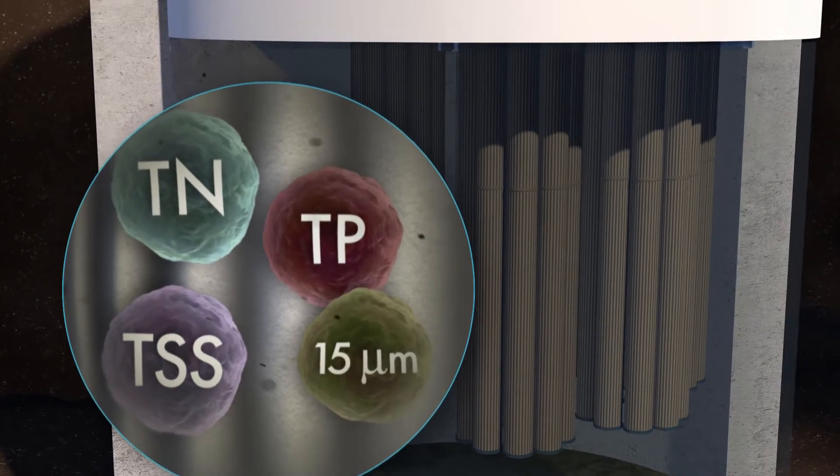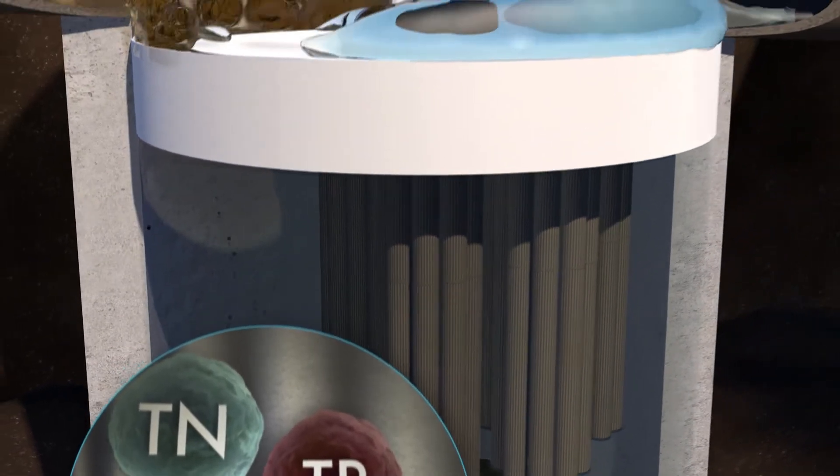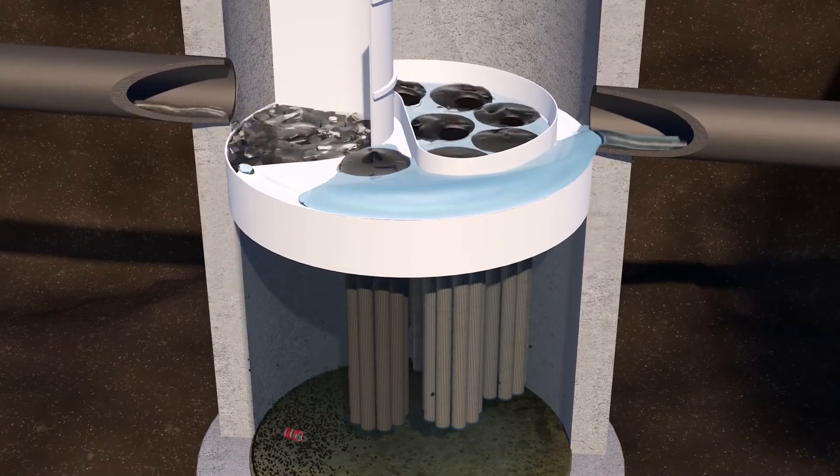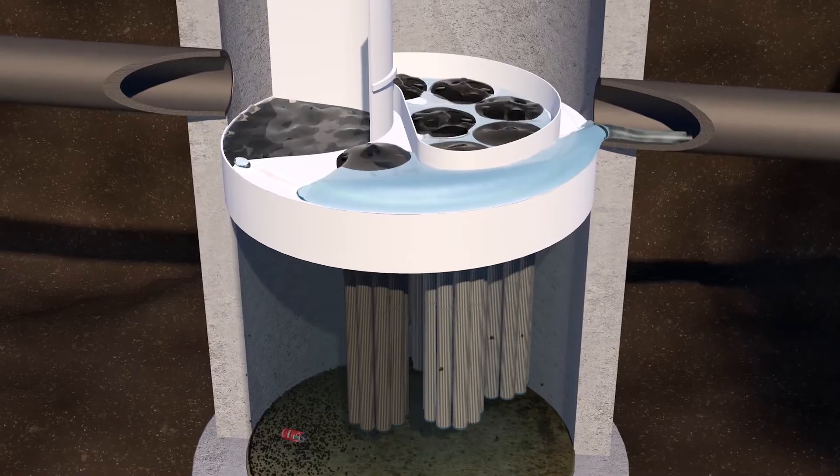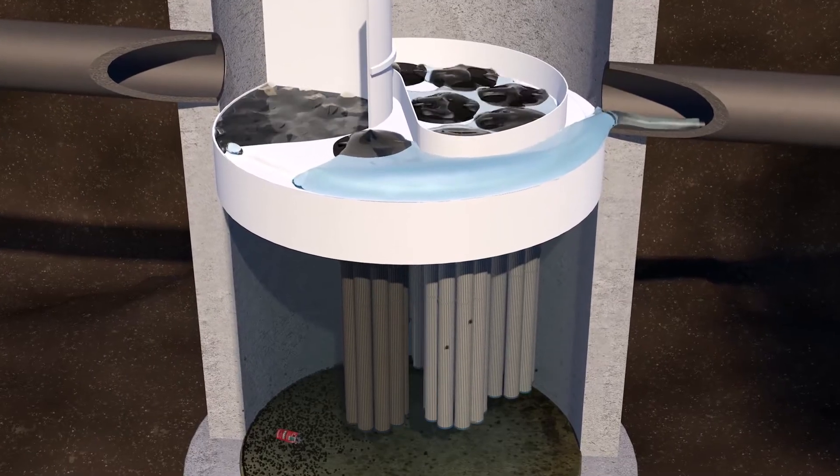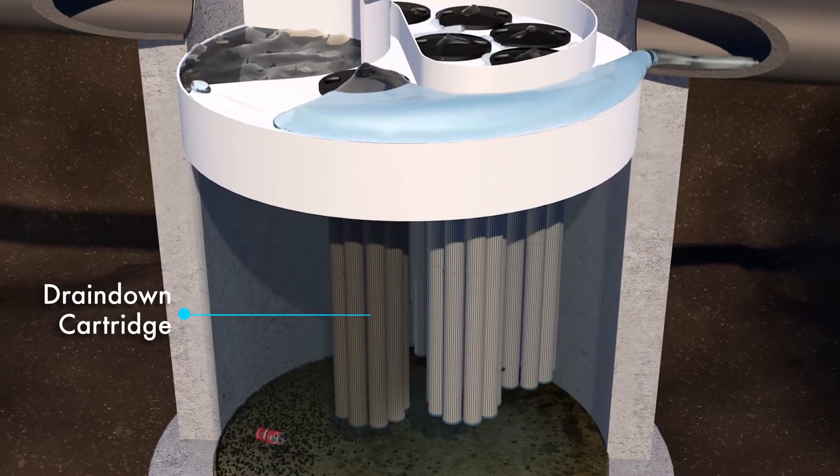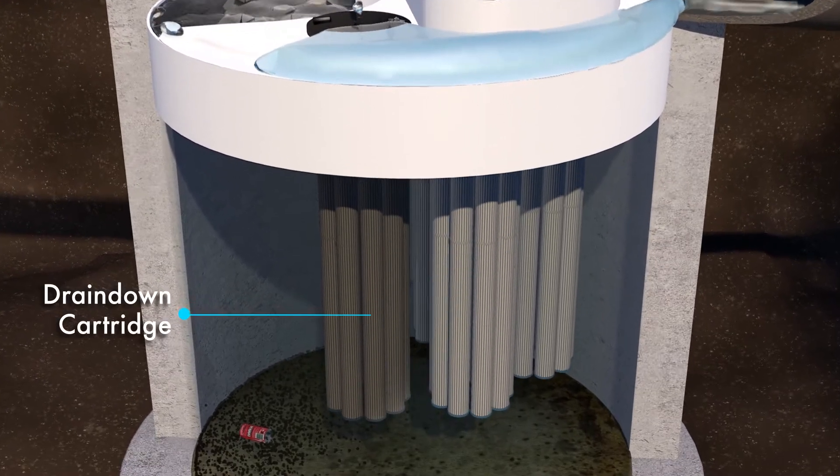As each storm subsides, the treated water caught in the backwash pool flows back into the treatment chamber through the membrane cartridges. This passive backwash extends cartridge life and keeps them clear for future events. The drain-down cartridge located outside the backwash pool enables water levels to balance.